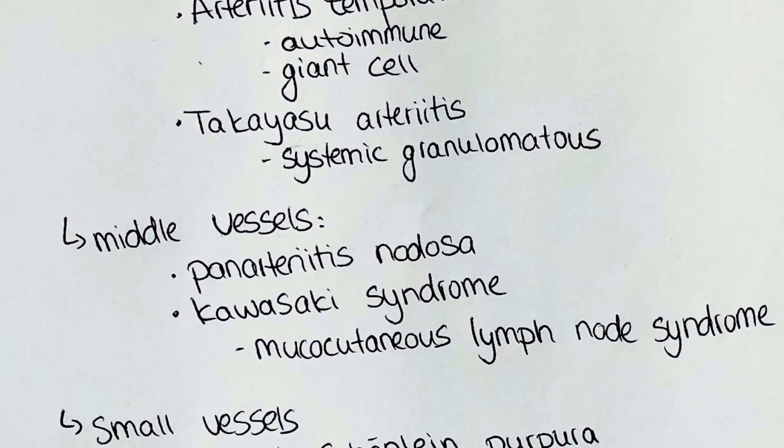Types of medium-sized vessel vasculitis are polyarteritis nodosa and Kawasaki syndrome. If you want to know more about polyarteritis nodosa or the collagenoses in general, you can see my series on collagenosis.